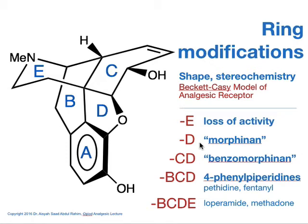Have a look at the derivatives I've put down in my lecture notes — see the different derivatives, the activity they afforded, and also in terms of side effects or toxicity. And then if you take out rings C and D, it will give you a benzomorphan. Have a look at what kind of activity they give up compared to morphine.